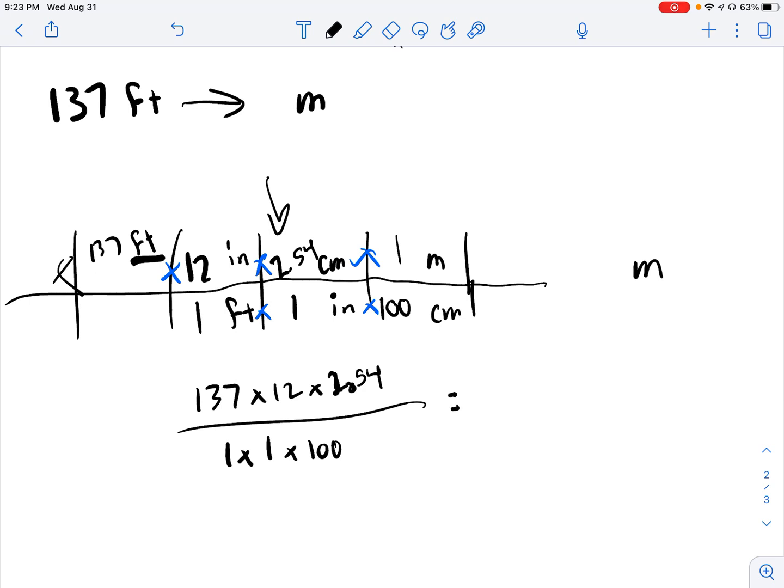And if we take that over 1 times 1 times 100. So go ahead and take those two numbers, create a fraction for yourself here. You should get 4,175.176 divided by 100.